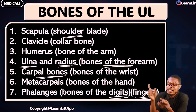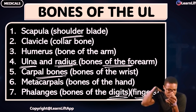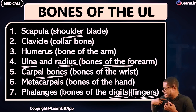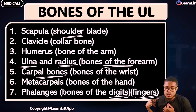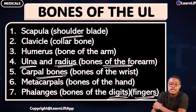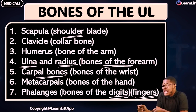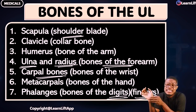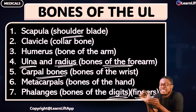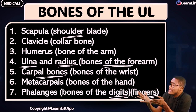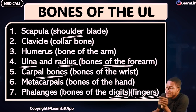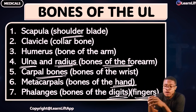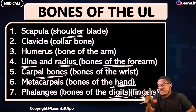So give me the bones of the upper limb. Number one is your scapula, which is posterior — also called the shoulder blade. Number two is the clavicle, or the collarbone. Number three is the humerus, or the bone of the arm. Then we have the ulna and the radius — bones of the forearm. Then the carpal bones — bones of the wrist — eight altogether. The metacarpals — bones of the hand. And the phalanges — bones of the digits or fingers.